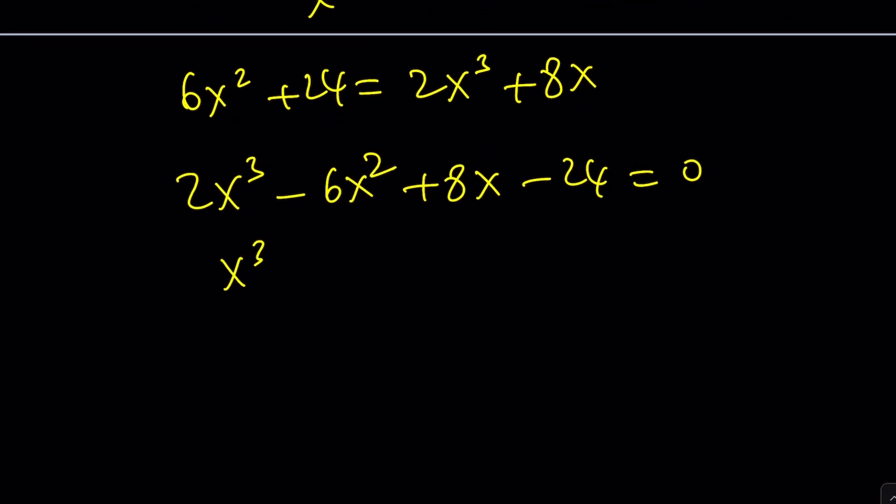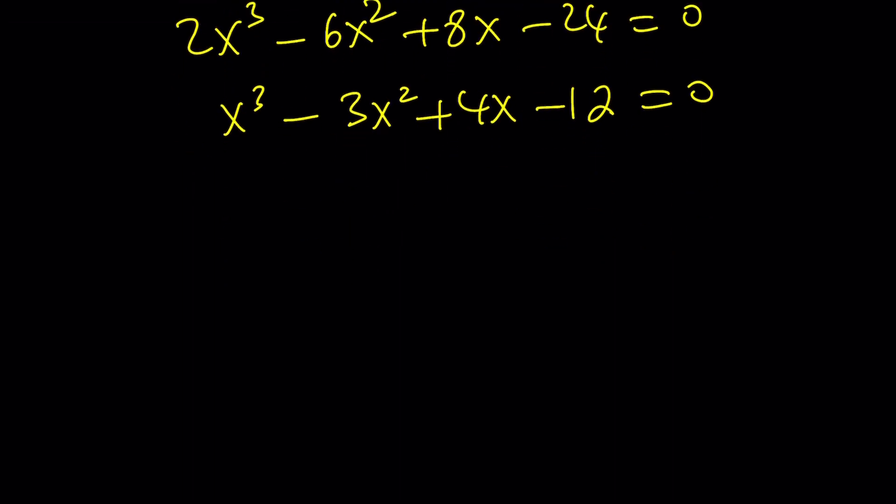2x cubed minus 6x squared plus 8x minus 24 equals 0. Everything is divisible by 2, so let's divide. We end up with this equation. Now this equation is cubic. You can use a cubic formula, but you don't need to do it. Because this is very much factorable.